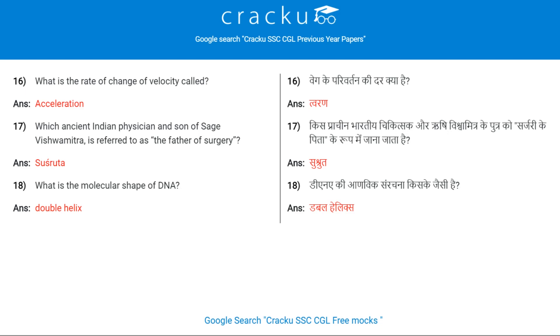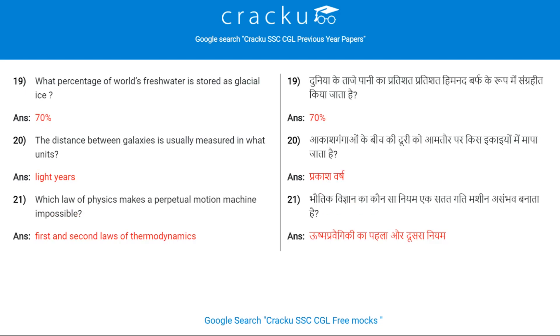Double Helix. What percentage of the world's fresh water is stored as glacial ice? 70%.